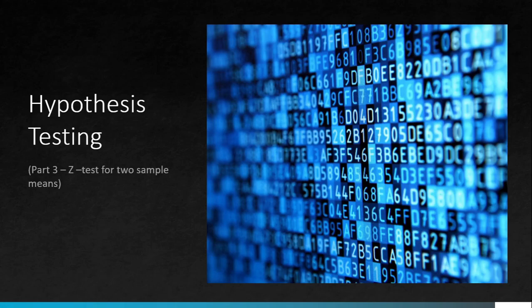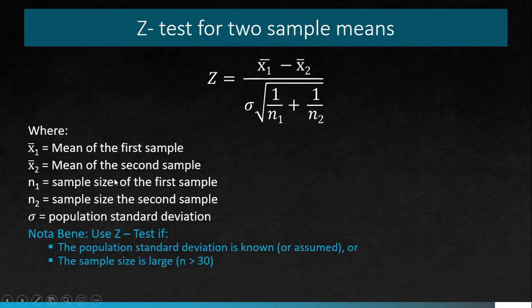This is the third part of our six-part discussion on hypothesis testing, and we'll be covering the Z-test for two sample means. Here's the formula we'll be using: Z equals sample mean 1 minus sample mean 2, divided by the population standard deviation multiplied by the square root of 1 over sample size 1 plus 1 over sample size 2.